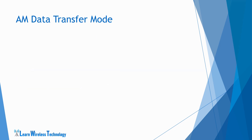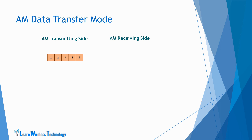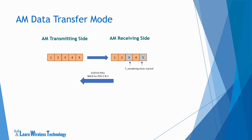Let's understand the Acknowledged Mode data transfer with an example. Consider that the transmitting entity sends PDUs numbered from 1 to 5 in sequence. Assume that the receiver receives PDUs 1, 2, and 4 while PDUs 3 and 5 are missing. The receiver shall start the reordering timer and wait for the missing PDUs to arrive. If the missing PDUs do not arrive before the expiration of the timer, this will trigger the receiving entity to send a status PDU containing a status report indicating the peer entity about the missing PDUs. The status report will contain NAC for PDUs 3 and 5. Upon reception of the status PDU, the transmitter shall retransmit the missing PDUs 3 and 5.